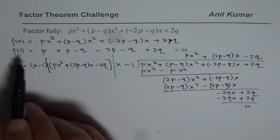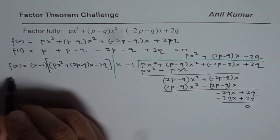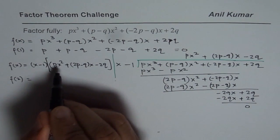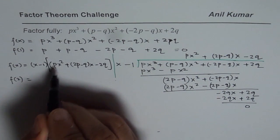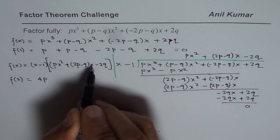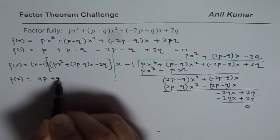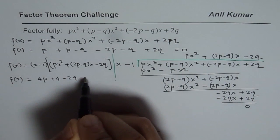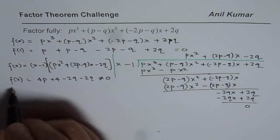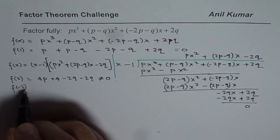So let us try f(2). So if I write f(2) in this, then what do we get? We get 2 squared as 4, we get 4p, and if I write 2 here, we get +4p - 2q - 2q. Well, that is not equal to 0.